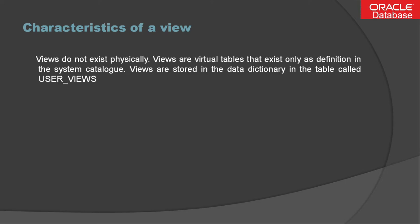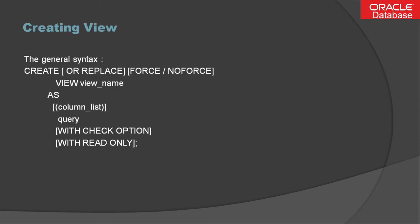When we talk about the characteristics of a view: views do not exist physically. Views are virtual tables that exist only as a definition in the system catalog. Views are stored in the data dictionary in a table called user_views. So if you have a lot of views in your database, you can query their details using this table user_views.